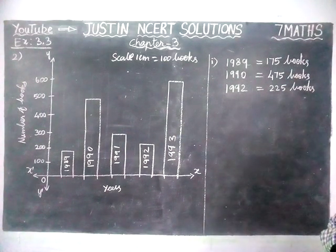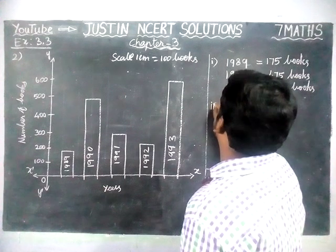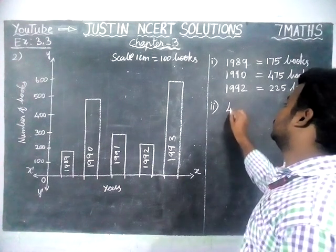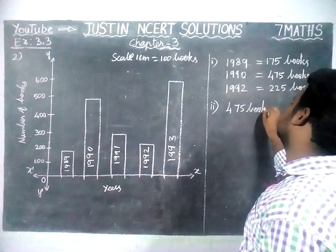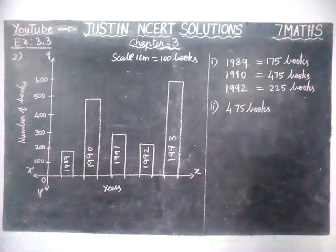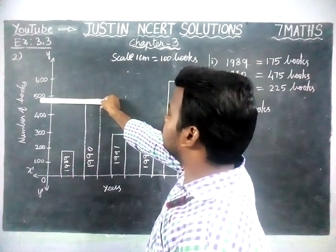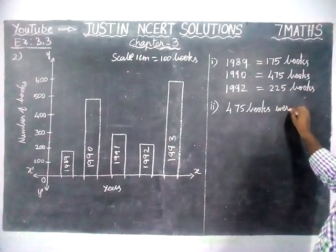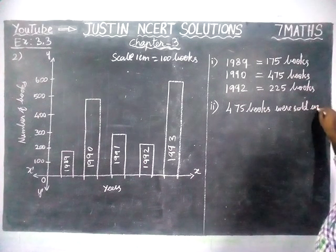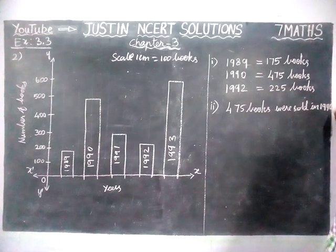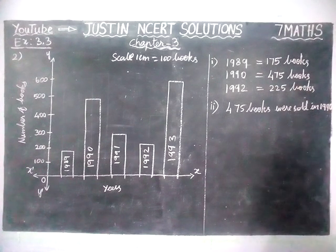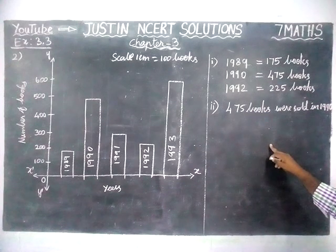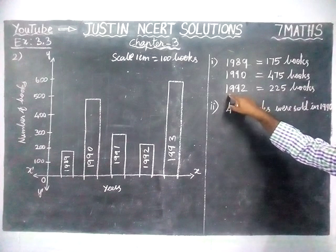Second question: In which year were above 475 books sold? The answer is: 475 books were sold in the year 1990. And in the same question, about 225 books were sold — we can find it — 225 books were sold in 1992.